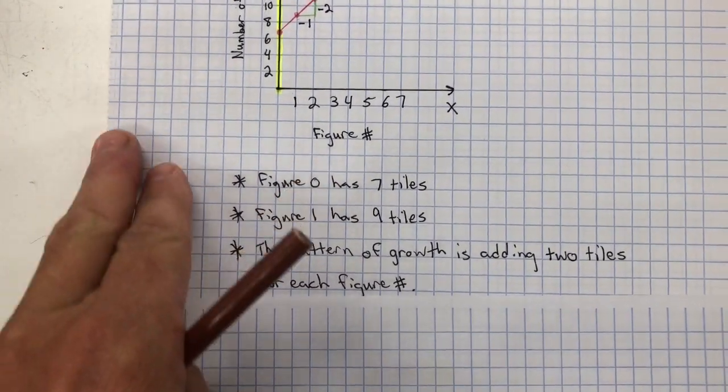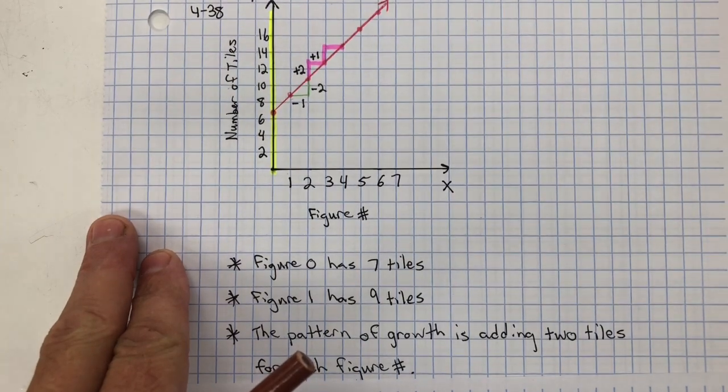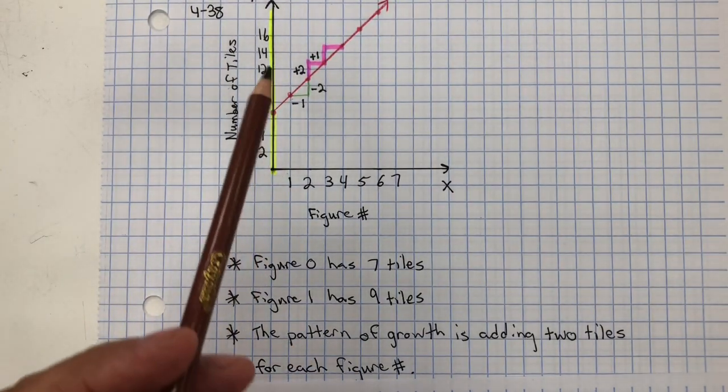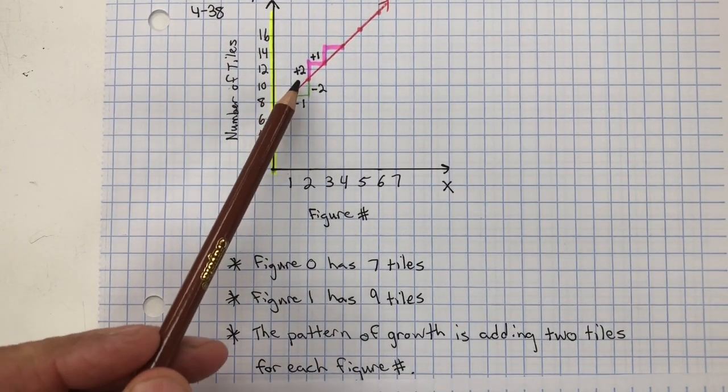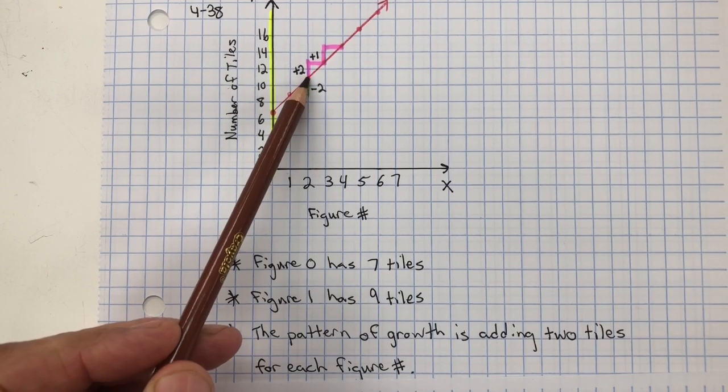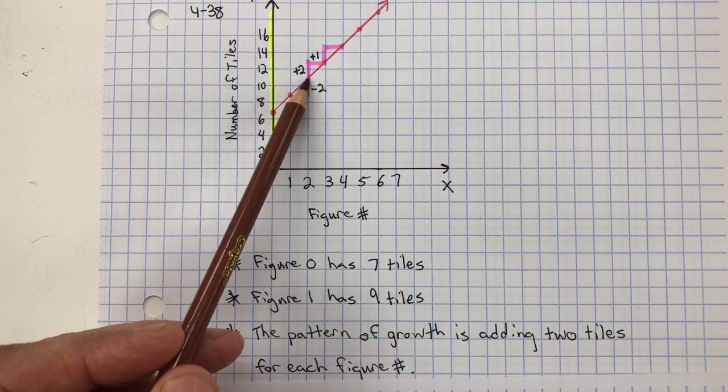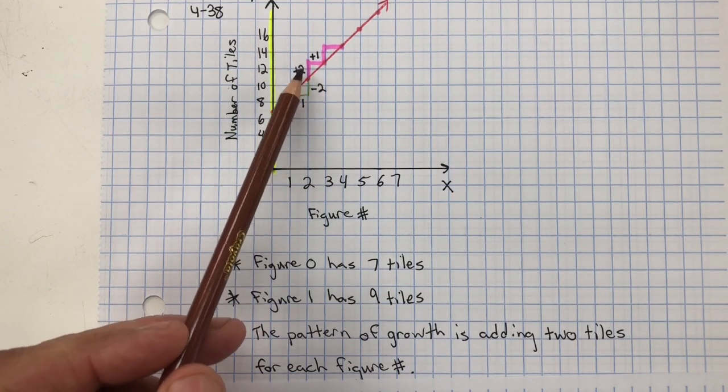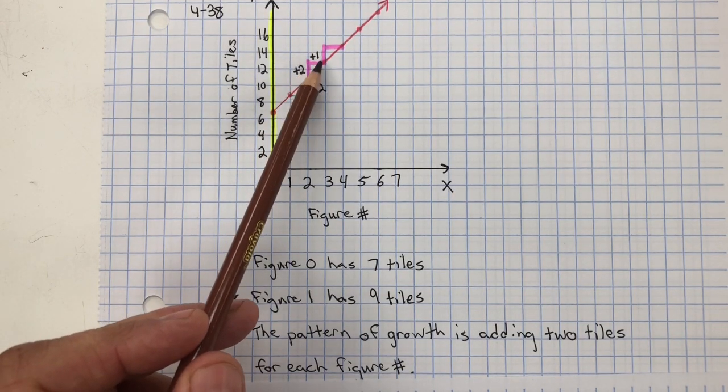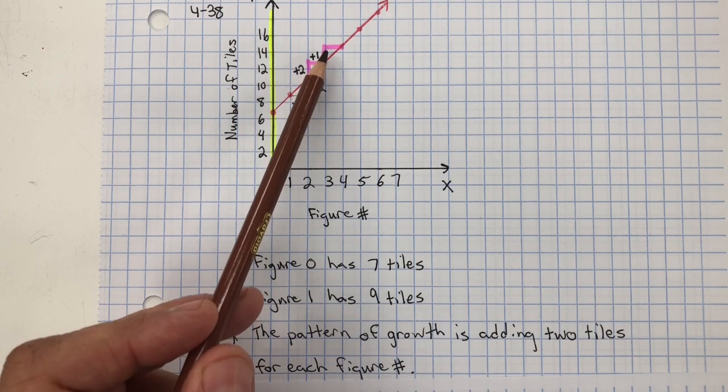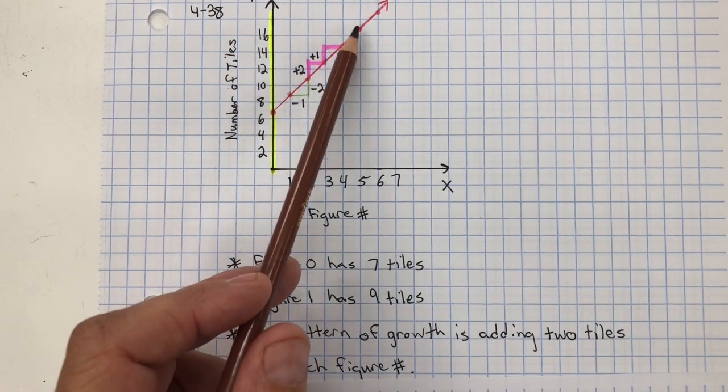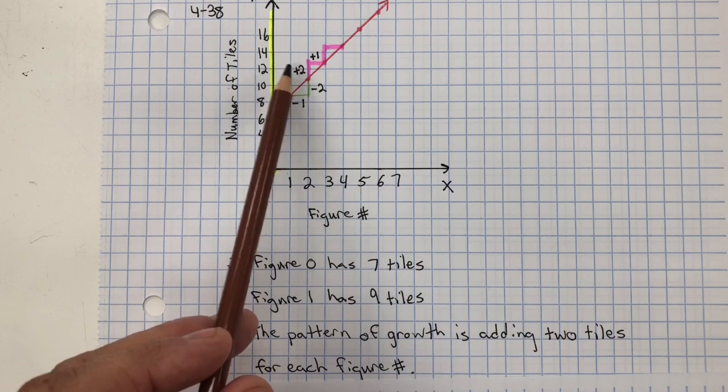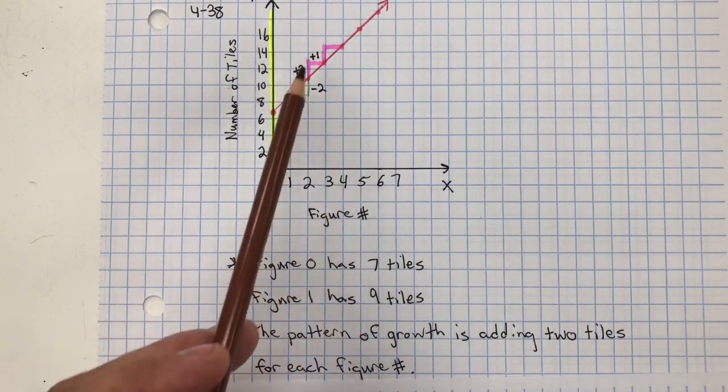So then we were to find the growth pattern of this graph, and you can see that it's growing. The number of tiles is growing by two for every one figure number. Positive two tiles for each figure number. And it's growing at a constant rate, which gives you that step configuration.